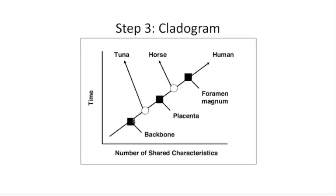Continuing up the tree, there's a branch for tuna, which is called a clade — that's where the word 'cladogram' comes from, since it's made of clades. The tuna's clade comes right after 'backbone.' The next characteristic going up the trunk is the placenta. Since placenta comes after the tuna's branch, the tuna does not have a placenta, but the horse and human both do.